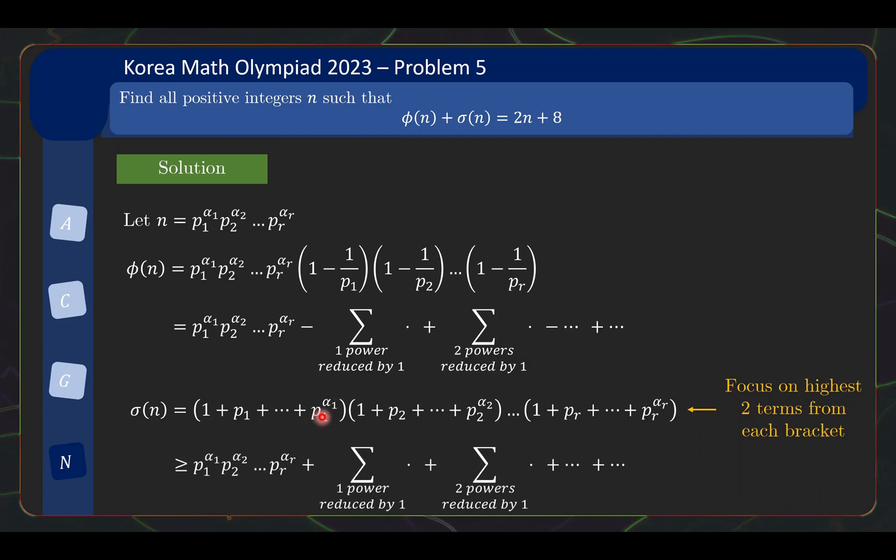So if you expand this whole thing and just focus on the terms contributed by the highest two terms. Firstly, you get the term from taking all the highest power which is n itself. Then you have the term where for one of the brackets you take the second highest but for the rest of the bracket you take the highest term. So you get plus sum of the term here but one of the powers is reduced by 1.